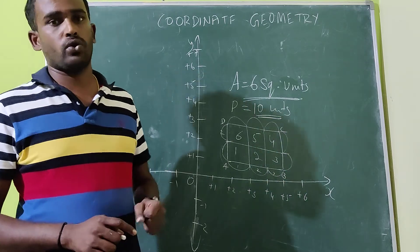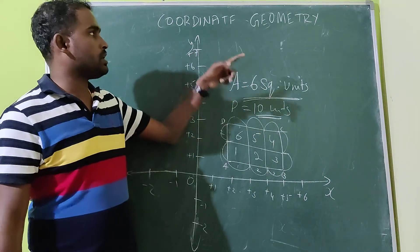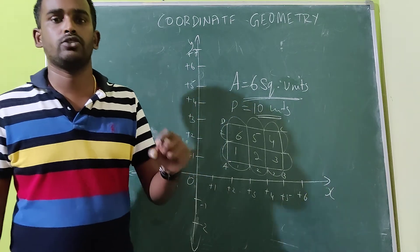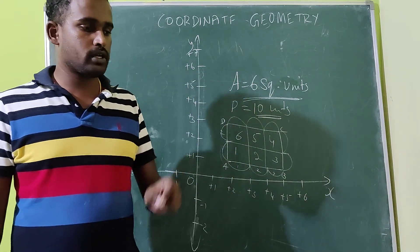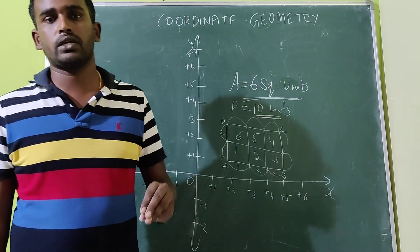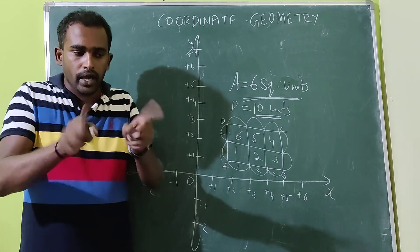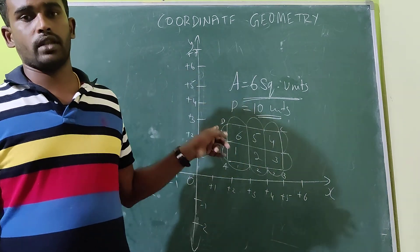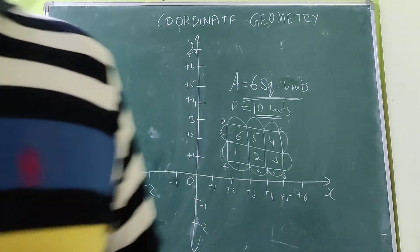Please write this in your notes. First heading in capital letters, then the side heading: Coordinate Geometry. Definition: It is a branch of mathematics. Here we can solve some geometrical concepts using a coordinate system — in brackets, write 'graph'. Thank you students.